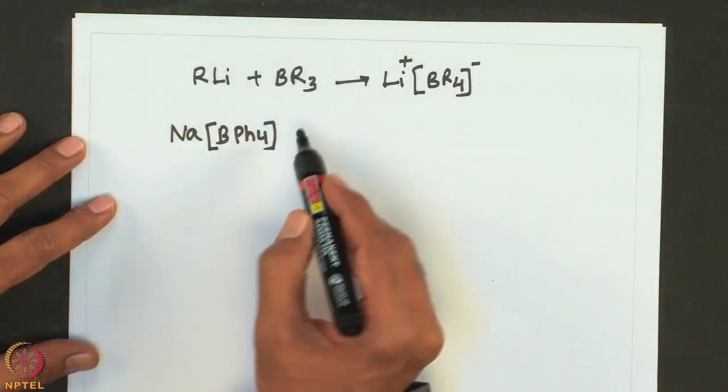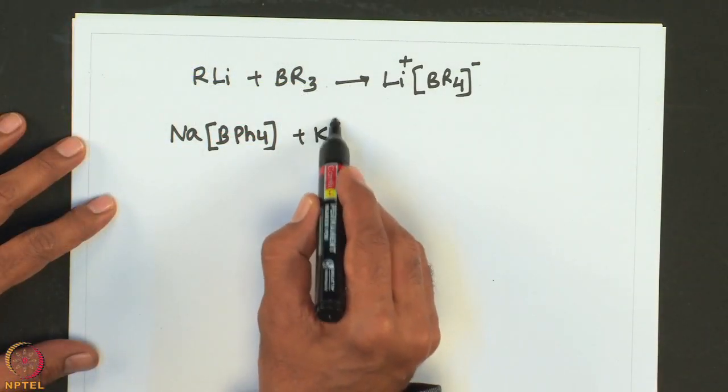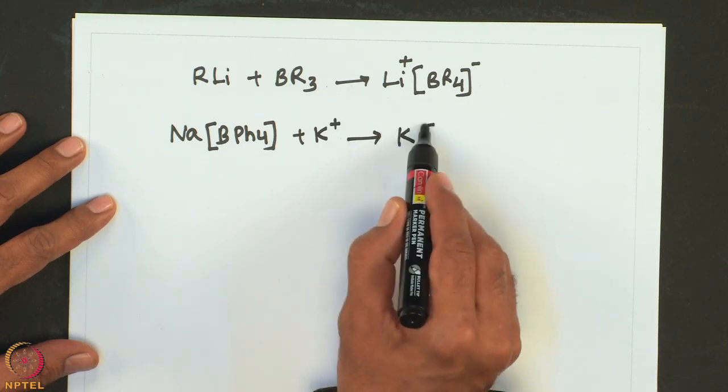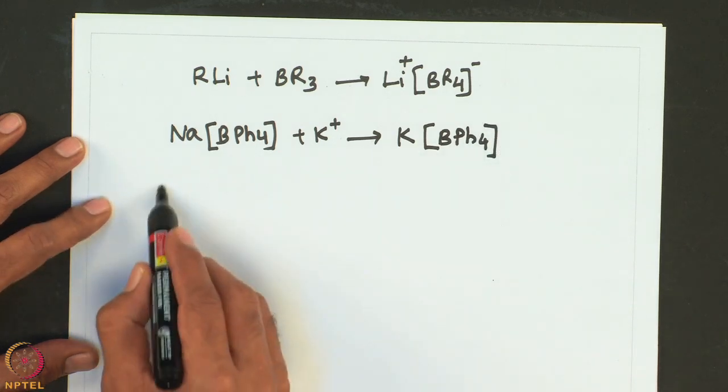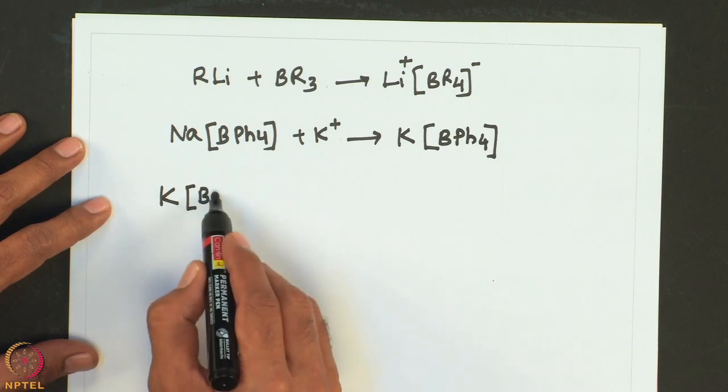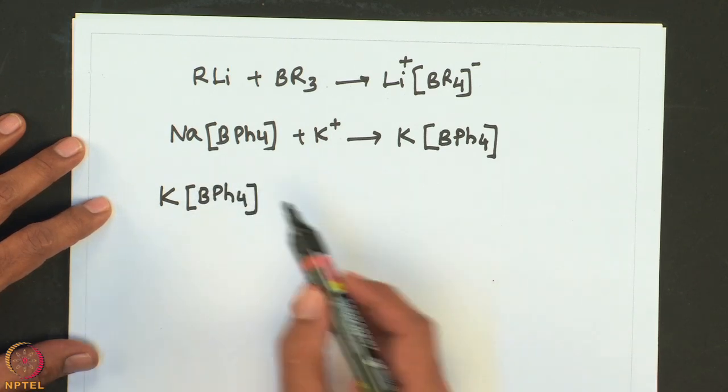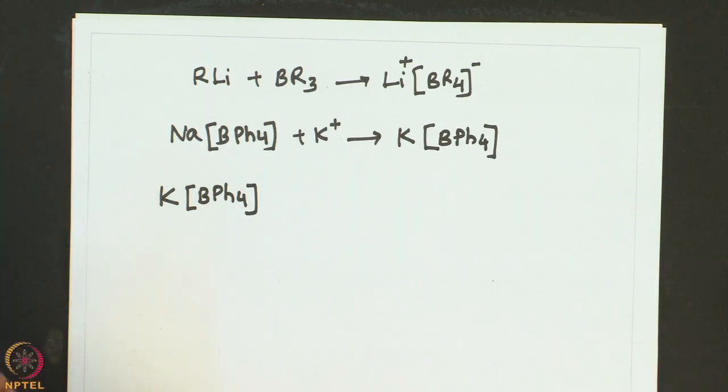In coordination chemistry, these large anions are very essential to stabilize and crystallize larger positive ions or larger cations. If you treat this with potassium, one can conveniently make the potassium salt as well. This potassium salt of tetraphenyl borate is insoluble and used for gravimetric estimation of potassium — an example of the low solubility of large cation and large anion salts in water.